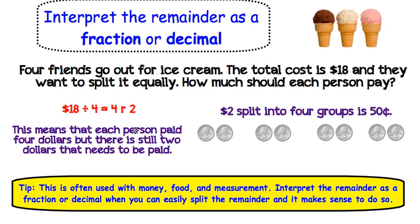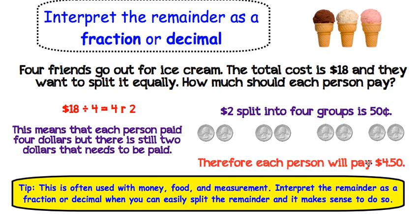So, each person on top of the $4 they are already paying is going to also pay $0.50. So each person will pay $4.50. What we have done is we have reported the answer as a decimal because 4.50 is a decimal.